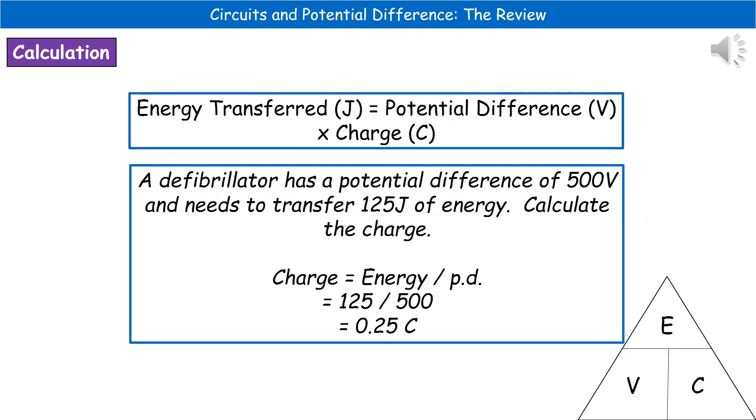To give you an example of the kind of question they could ask us on this, a defibrillator has a potential difference of 500 volts and needs to transfer 125 joules of energy. Calculate the charge. So, the first thing you'll notice is that we're going to have to rearrange our actual equation there. So, we've been given our energy transferred and the potential difference, so therefore we need to change it so that charge is the actual subject of our formula.